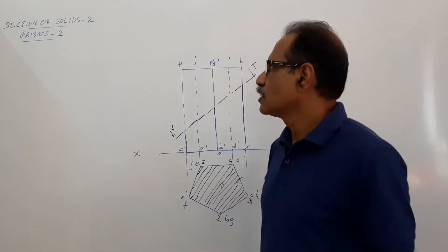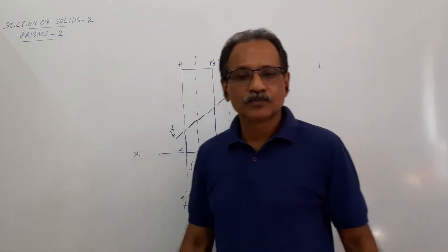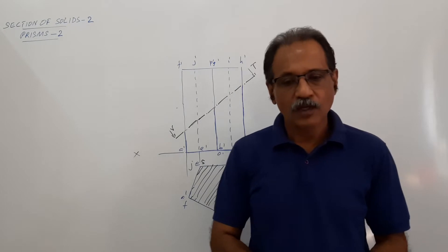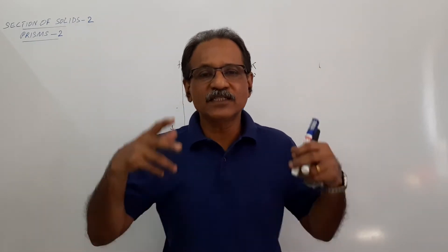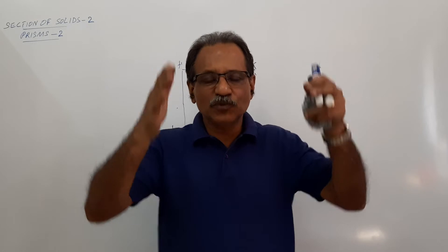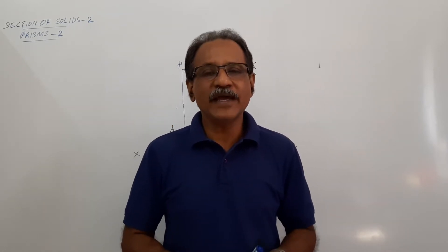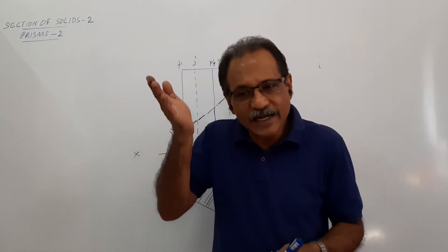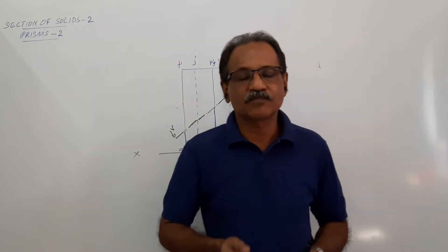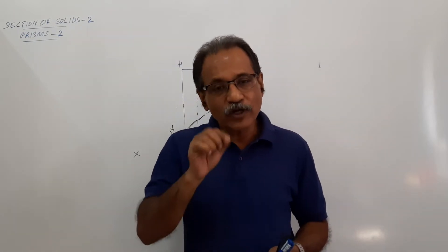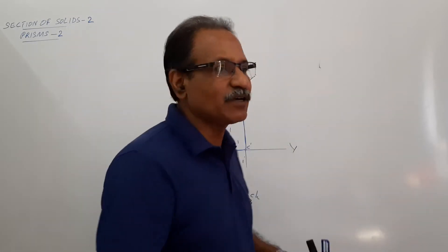Hi students. Solids 2, Prisms 2 — Pentagonal Prism. The prism has a 25mm side and 60mm axis, standing on HP. This is cut by a cutting plane which is inclined at 40 degrees to HP, bisecting the axis. So I draw the plan and elevation of the prism.